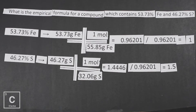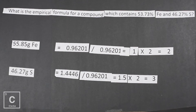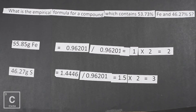We get a 1 and a 1.5. Normally you'd round 1.5 up to 2, but you cannot do that for empirical formula. We need to think of a number we can multiply by to get a whole number. Since 0.5 means a half, if we multiply by 2 that gives us a whole number. So multiplying 1 by 2 gives 2, and 1.5 by 2 gives 3. We have two irons and three sulfurs, so our empirical formula is Fe2S3.